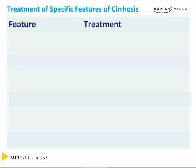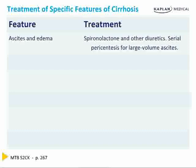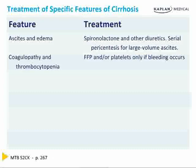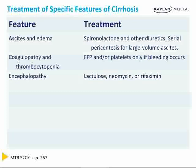For the ascites and edema, you can give spironolactone and other diuretics such as Lasix. Serial large-volume taps are also helpful to reduce the fluid burden. For coagulopathy and thrombocytopenia, you can give FFP or platelets if bleeding occurs. For encephalopathy, you can give lactulose, neomycin, or rifaximin.